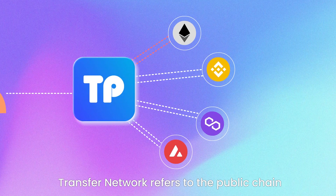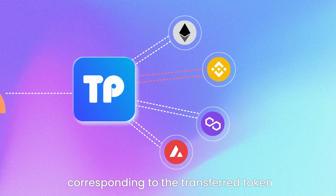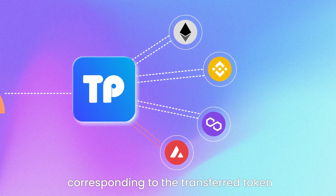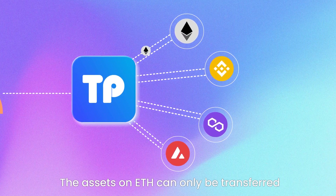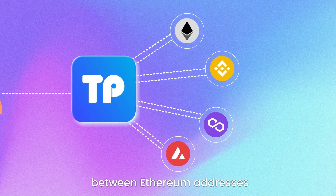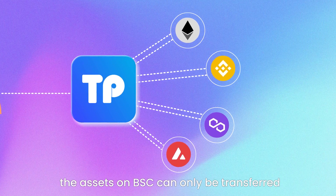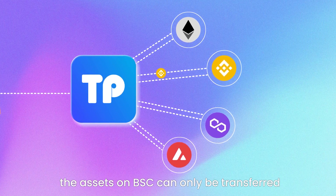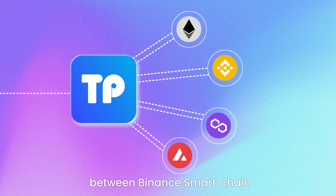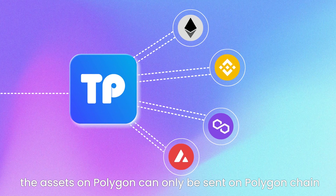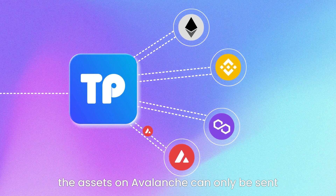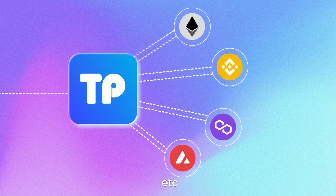Transfer network refers to the public chain corresponding to the transferred token. The assets on ETH can only be transferred between Ethereum addresses. The assets on BSC can only be transferred on Binance Smart Chain. The assets on Polygon can only be sent on Polygon Chain, and the assets on Avalanche can only be sent on Avalanche Chain.